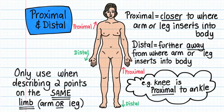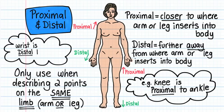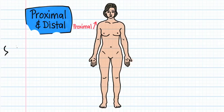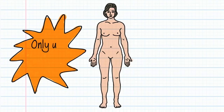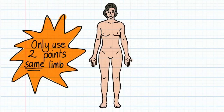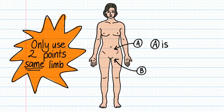But on the arm, the wrist is distal to the elbow, because the wrist is further away from where the arm inserts into the body. Remember, only use the terms proximal and distal when referring to two points on the same limb. If a point is no longer on a limb, like point A in this drawing, then you can't use the term proximal anymore. Instead, point A would be superior to point B.